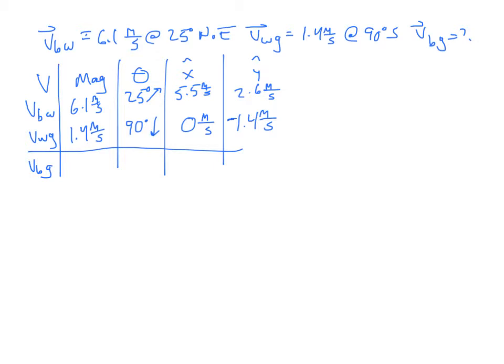Now let's add up our x and y components. The x's add up to 5.5 meters per second. For the y's: 2.6 minus 1.4 gives us 1.2 meters per second. Why is that less than it previously was? Because the motion of the water is acting against it.